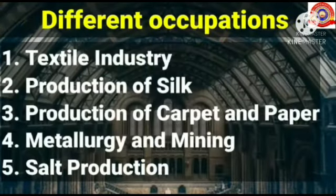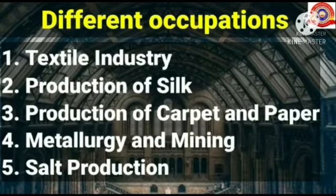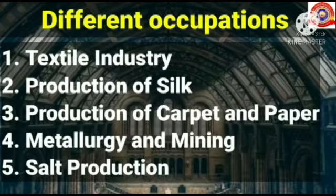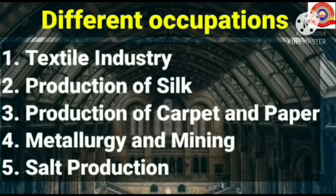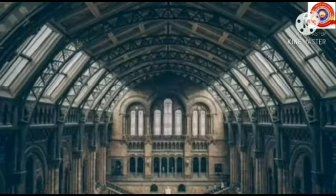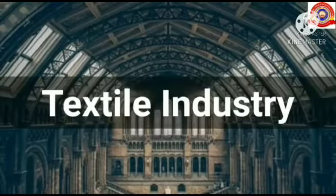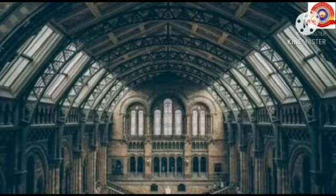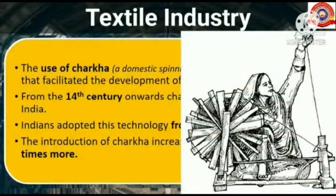Next we are going to see different occupations led by the people of medieval India, like textile industry, production of silk, production of carpet and paper, metallurgy and mining, and salt production. Let's see the first one: textile industry.